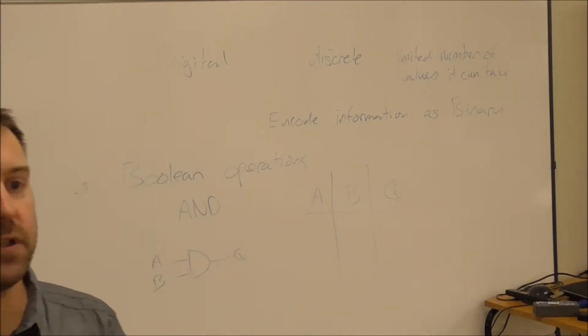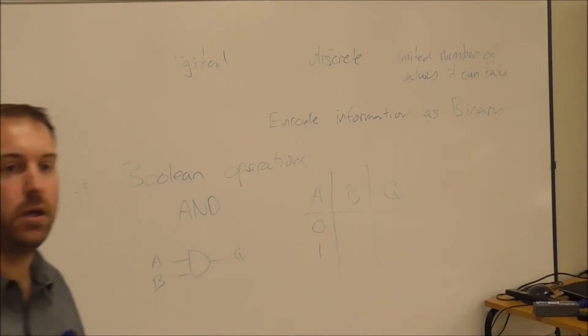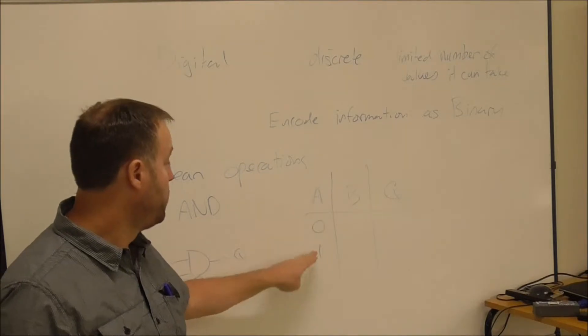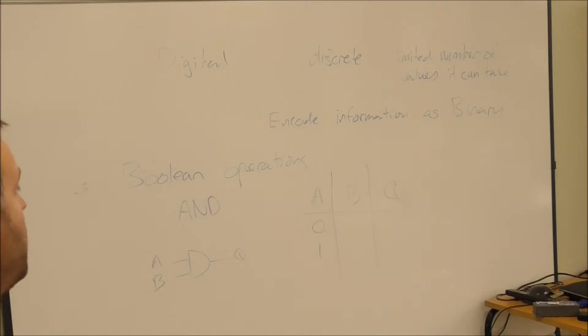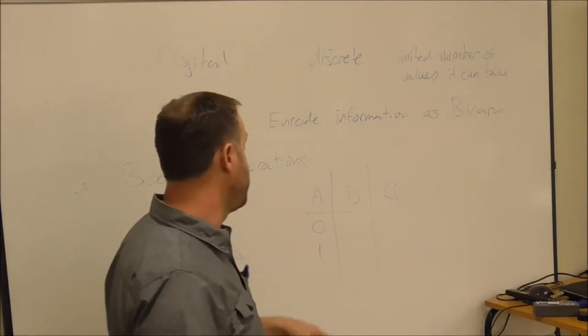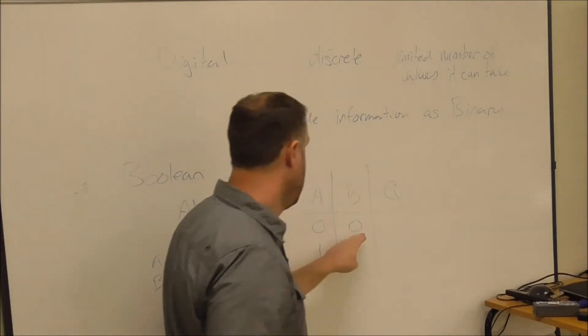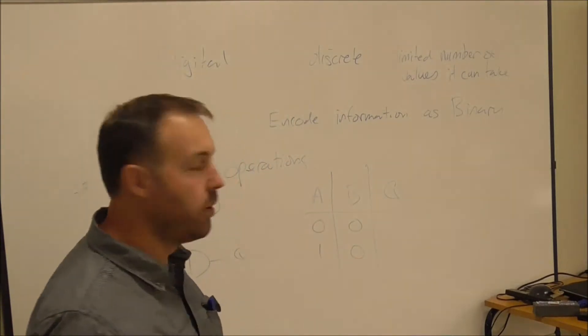Now, A can take how many different states? Two, can't it? Zero and one. I'm going to use zero and one as my two ways of representing the states. That would be a low voltage, that would be a high voltage or an on or an off. And B, the different combinations of that, I can have A being zero and B both being zero. I can have A being one and B being zero as well. So they're two different combinations.